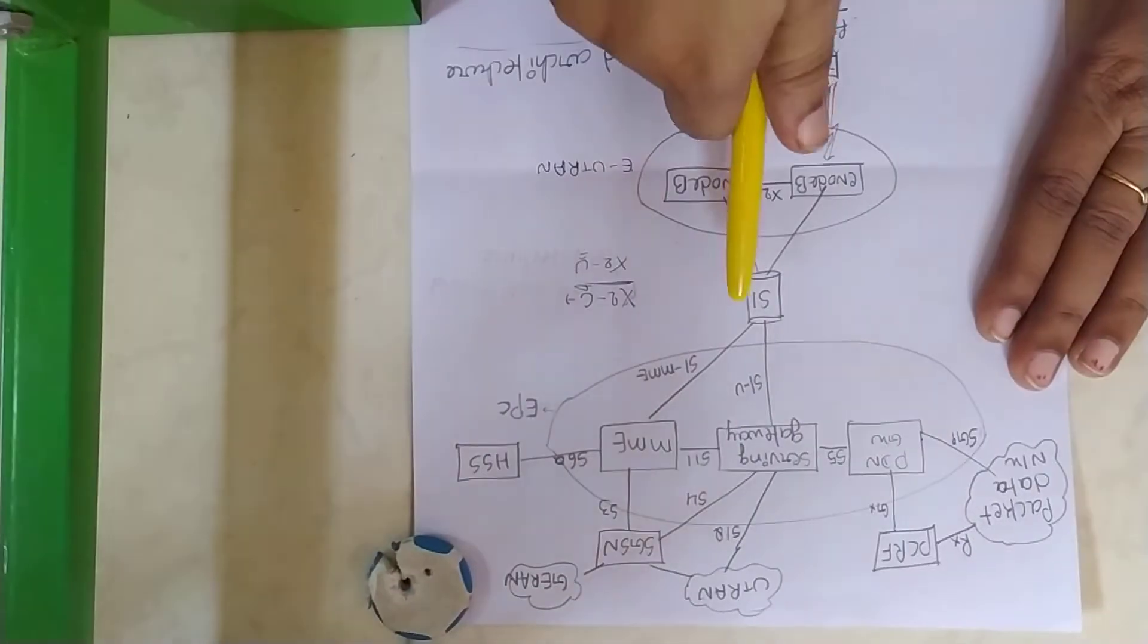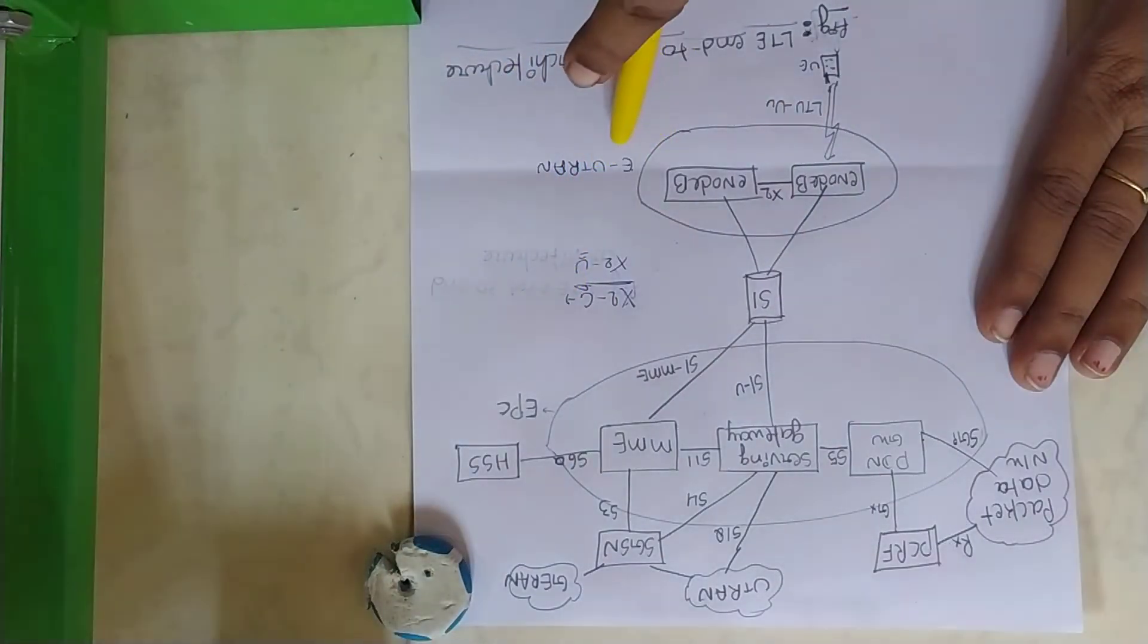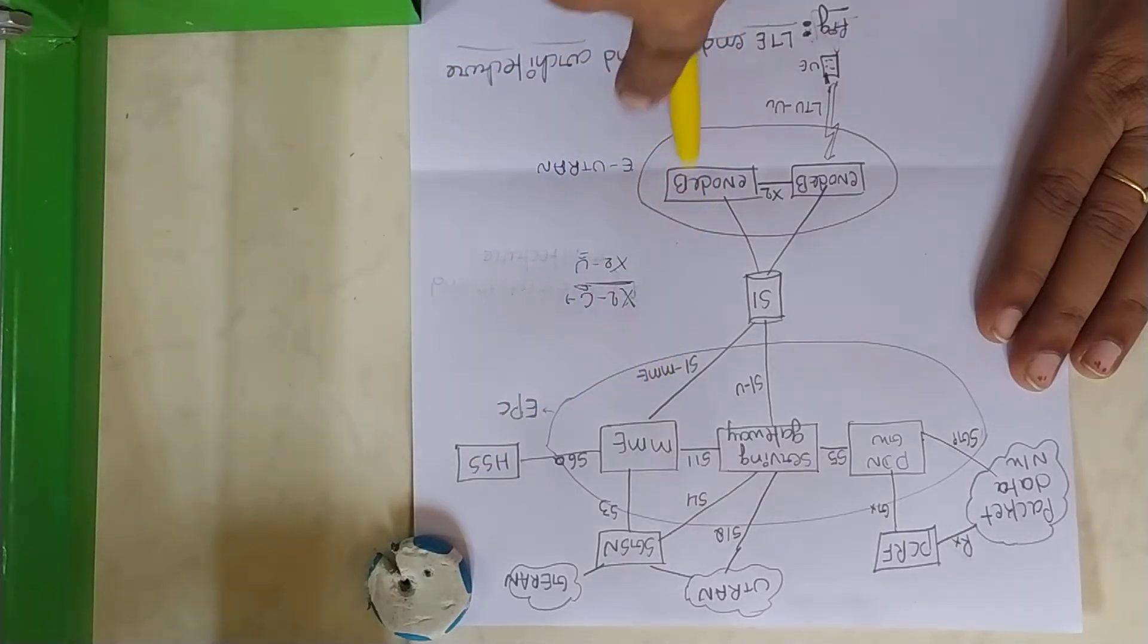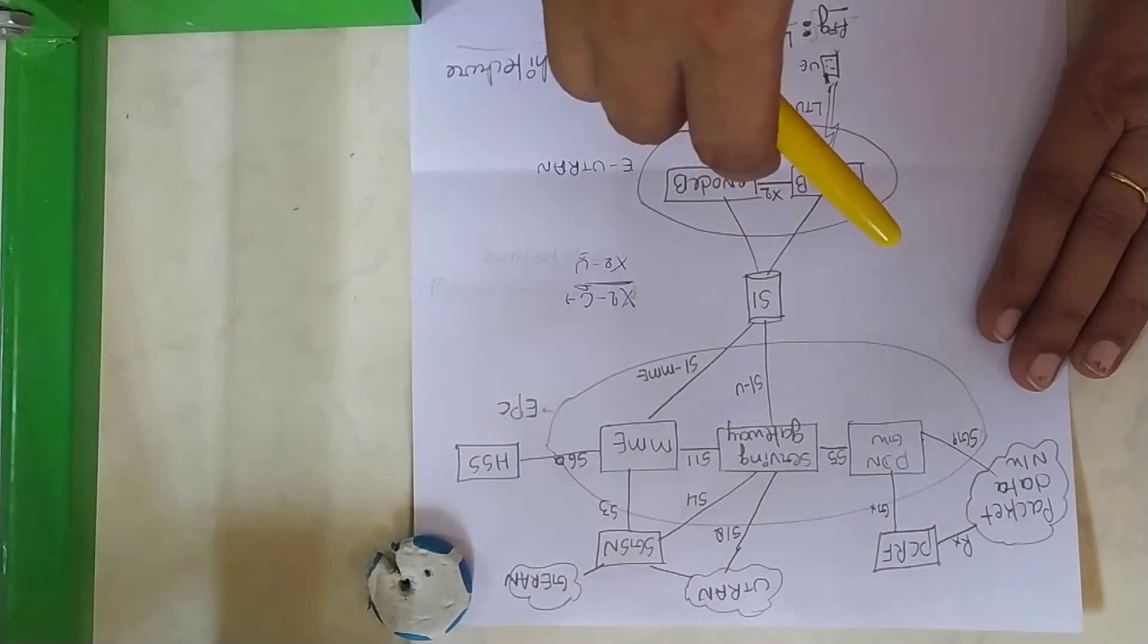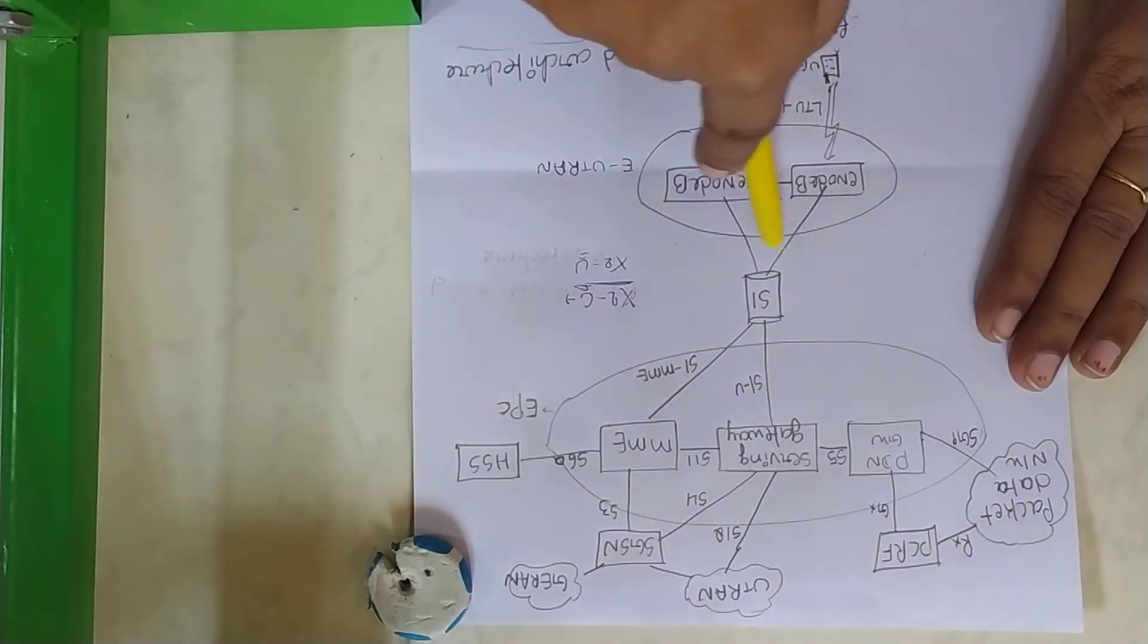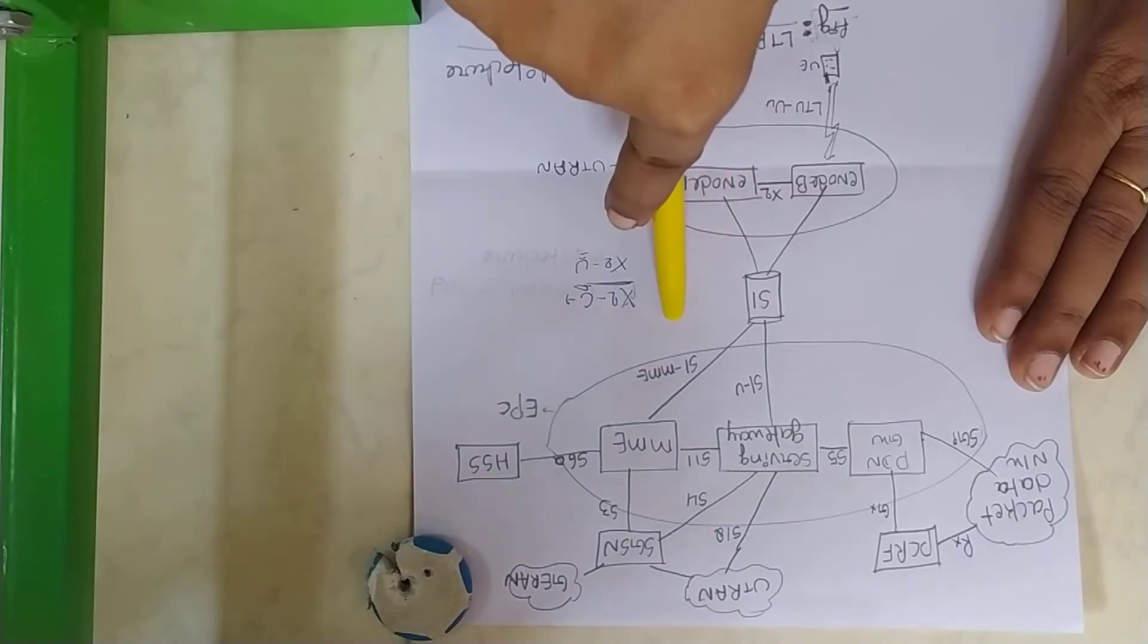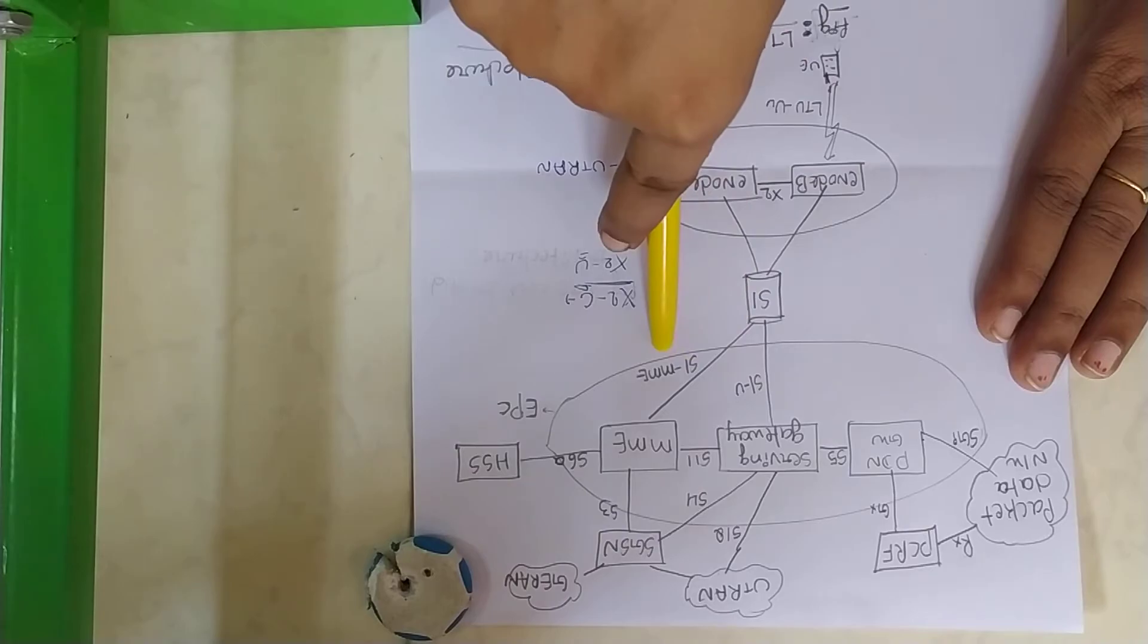There is an S1 interface between EPC and EUTRAN. This S1 interface separates EUTRAN and EPC. Again, this S1 interface consists of S1-U and S1-MME. S1-U is user plane interface. S1-MME is control plane interface.